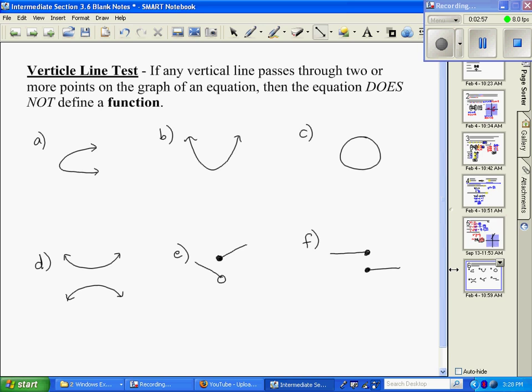Now we're going to do it by vertical line test, which is most people's favorite because it's very basic. It says if a vertical line passes through 2 or more points on the graph, it does not define a function. So basically, if I take vertical lines and I go through here, if it touches more than one point, it is not a function.